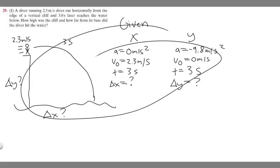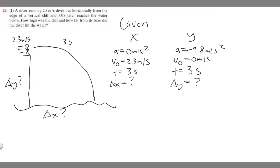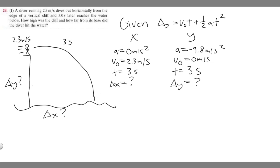Now we have our given values and a drawing, so let's solve the problem. For two-dimensional kinematic problems, the main formula you'll use is: delta x or delta y equals v-sub-zero times t plus one-half a t squared. This formula works for most of these problems, though a few may require other kinematic equations.